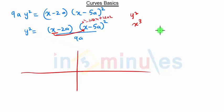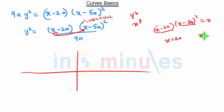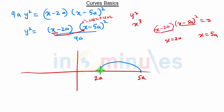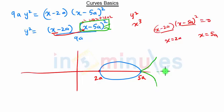When we put y equal to 0, we get (x − 2a)(x − 5a)² = 0. Either x = 2a or x = 5a. So on the x-axis we have two points: 2a and 5a. This gives us our loop between these two points. The highest power term is (x − 5a)², so the curve opens toward x = 5a.